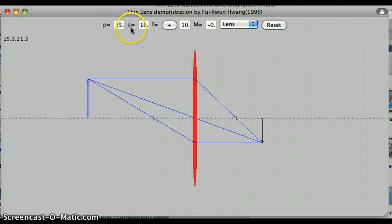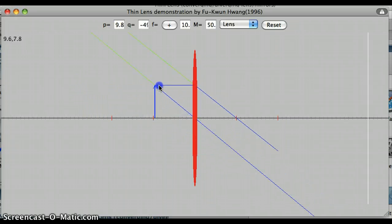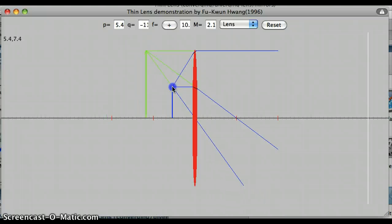You'll notice up here P and Q values I can read off. So right now here Q is a positive number. If I move over and get a virtual image, Q is here a negative number. So we can practice our positive and negative conventions.